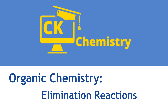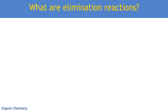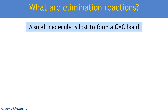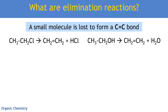In this organic chemistry video, we are going to focus on elimination reactions. Elimination reactions happen when a small molecule, such as water or HCl, is lost from an organic molecule, such as an alcohol or a haloalkane, and we're forming a carbon-carbon double bond. So the product of this reaction is an alkene.